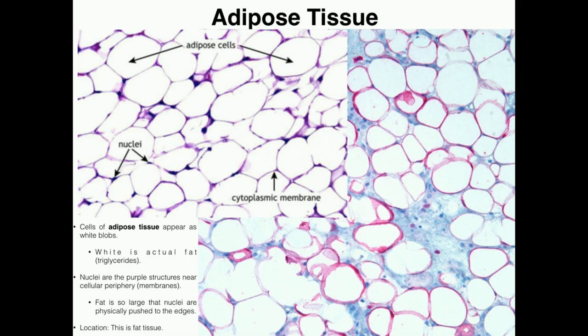Now we've got three other tissues which are actually a little bit easier. This is a very easy one to recognize: adipose tissue. This is body fat.